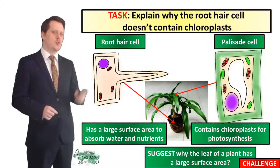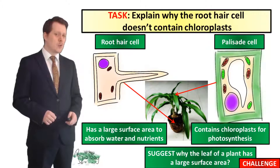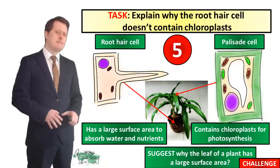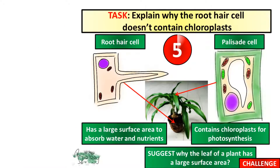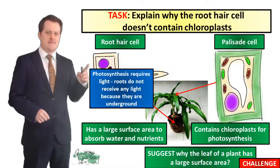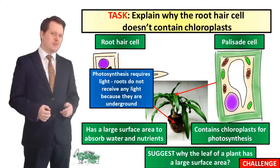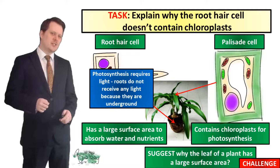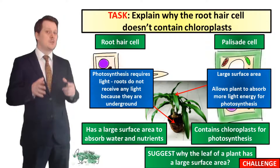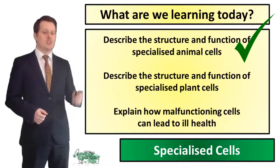For our next task, explain why the root hair cell doesn't contain any chloroplasts. For an extra challenge, also suggest why the leaf of a plant has a large surface area. The root hair cell doesn't contain chloroplasts because photosynthesis requires light, and roots do not receive any light as they are underground — so it would be pointless. The leaf has a large surface area so that it can absorb more light energy from the sun, which it requires for photosynthesis.